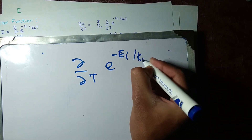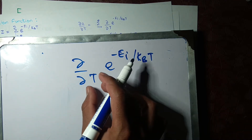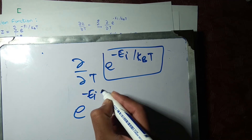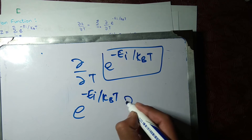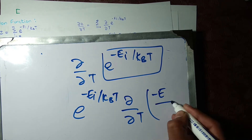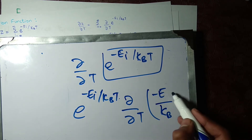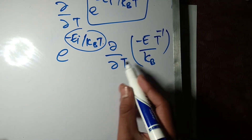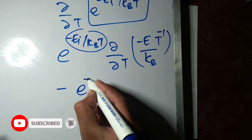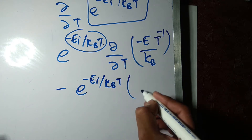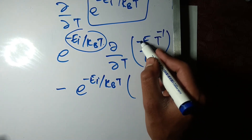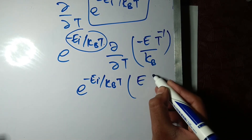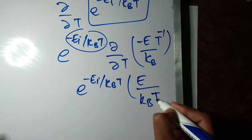Let me show that step explicitly. Taking the partial derivative with respect to T of e^(−E_i / k_B T): the power factor comes down, giving (−E_i / k_B T), and then we take the derivative of the exponent with respect to T. Writing T in the denominator as T^(−1), the derivative of T^(−1) is −T^(−2), so the two minus signs cancel and we get E_i / (k_B T^2) times the original exponential.